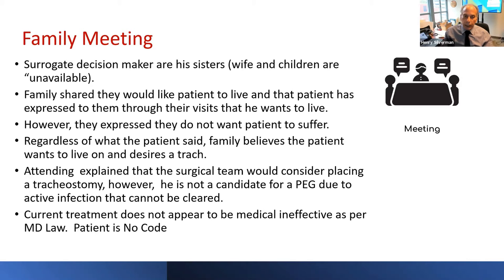The family expressed they do not want the patient to suffer. Regardless of what the patient is saying, the family believes the patient wants to live and would desire a tracheostomy. The attending explained the surgical team would consider placing a tracheostomy; however, the patient is not a candidate for a PEG tube due to active infection that cannot be cleared. Current treatment does not appear to be medically futile as per Maryland law, but the patient is a no code. Should the patient receive a tracheostomy?